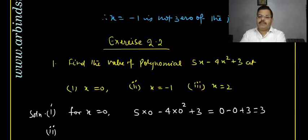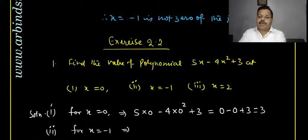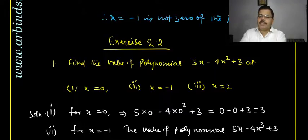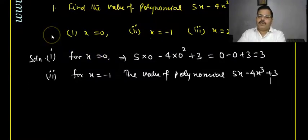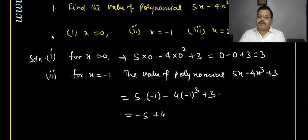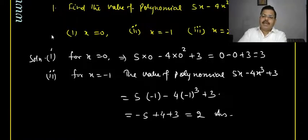For x = −1: p(−1) = 5(−1) − 4(−1)³ + 3 = −5 − 4(−1) + 3 = −5 + 4 + 3 = 2. The value of the polynomial is 2. For x = 2: p(2) = 5(2) − 4(2)³ + 3 = 10 − 32 + 3 = −19.